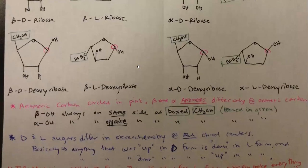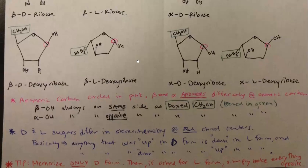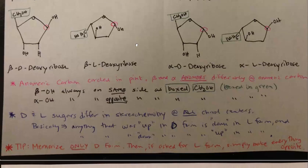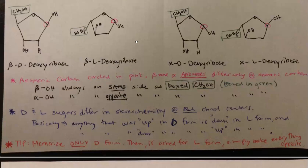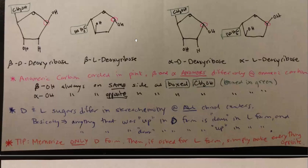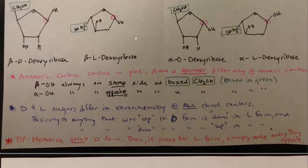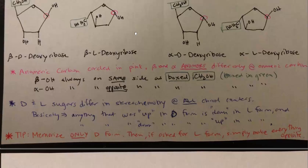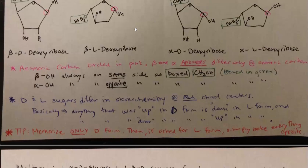Here I made a few notes. I circled all the anomeric carbons in pink, so the beta and alpha anomers differ only at that anomeric carbon, otherwise they're identical. The beta OH is always on the same side as the boxed CH2OH, which I boxed in green.